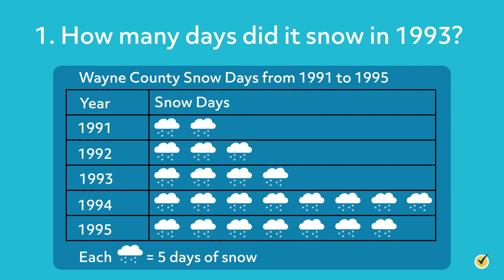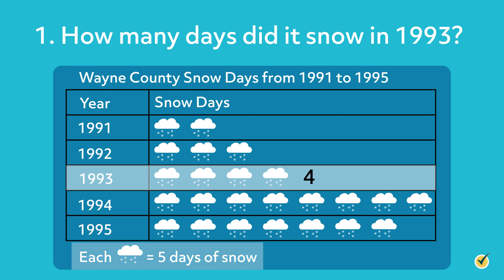How many days did it snow in 1993? Start by looking at 1993 and count the number of symbols next to it, which is 4. Remember that we need to use the key to interpret the value of each symbol. According to the key, each symbol represents 5 snow days. Multiply 5 times the number of symbols given to find the total number of snow days. Since 5 times 4 equals 20, there were 20 snow days in 1993.